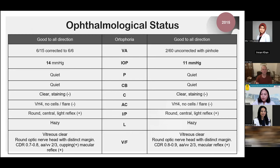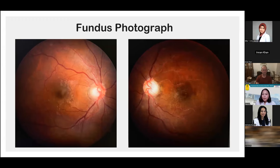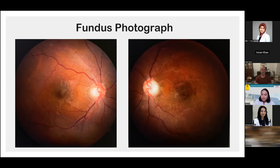No inflammation or pigmented lesion was detected in the anterior chamber. Gonioscopic examination confirmed the angle was open in all quadrants in both eyes. Fundoscopic examination revealed vertical cup-to-disc ratio enlargement in both eyes — approximately 0.7 to 0.8 in the right eye with cupping and nasalization, and a larger cup-to-disc ratio of 0.8 to 0.9 in the left eye. There was no hemorrhage or signs of ischemia in either eye.